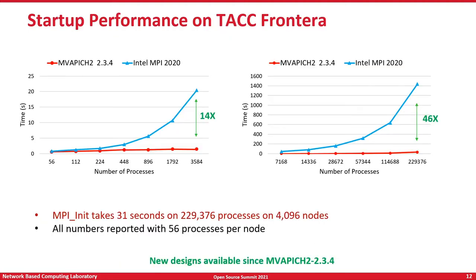As systems become very large, when you are trying to run a job — whether it is traditional HPC or machine learning deep learning — job startup itself takes a lot of time. We have been continuously optimizing this over the last several years. For 3,584 processes, we achieve startup in a very small time. Even for a very large 229,000 processes on 4,000 nodes, MPI init just takes 31 seconds. In just 31 seconds, your job is ready to run, delivering competitive performance compared to other MPI libraries.